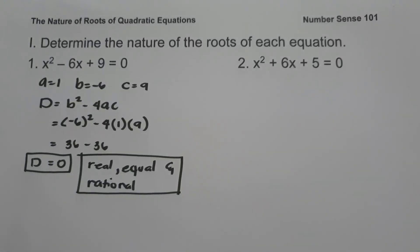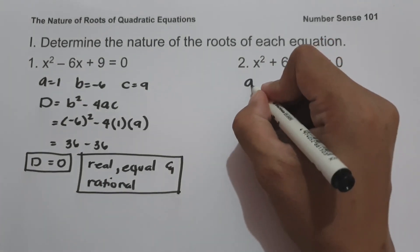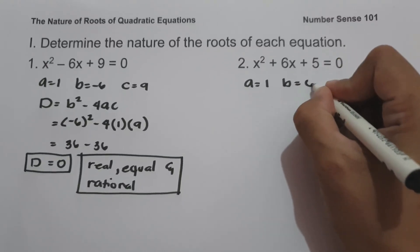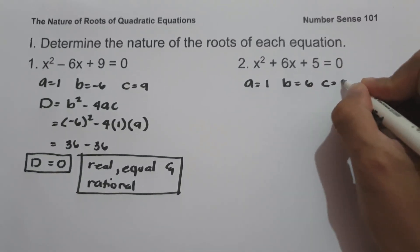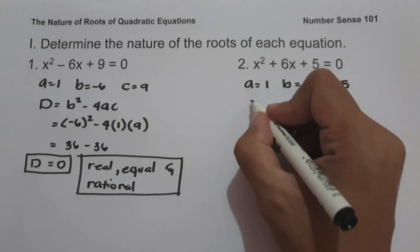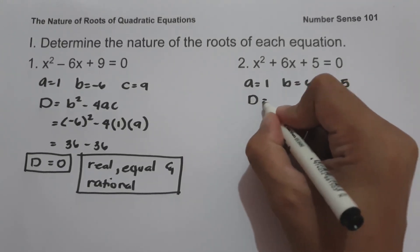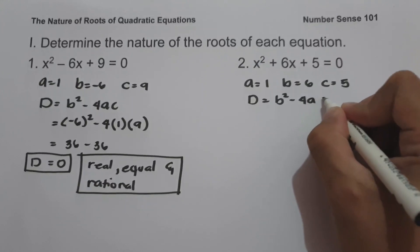On number 2, we have x squared plus 6x plus 5 equals 0. So let us identify the value of a, which is 1, b, that is 6, and c is 5. And the formula for the discriminant is d equals b squared minus 4ac.